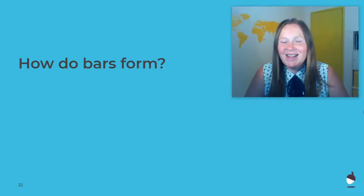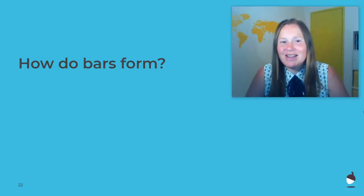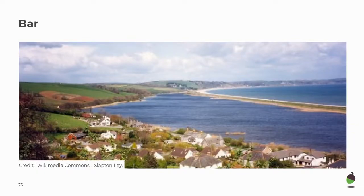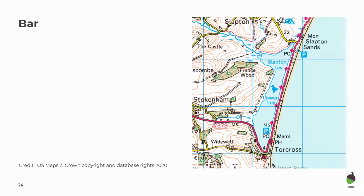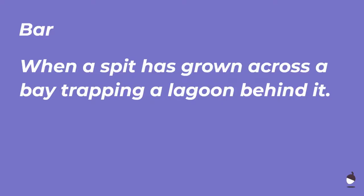Good work. Let's transport our learning on a little bit further to now have a look at how bars form. Here's a photo of a bar, and this bar is at Slapton Link. You can't actually see the whole of the bar because it's such a large landform. Here it is on the map — the same one. You can see that we've got a bar that stretches over two kilometres from Torcross to Slapton Sands. A bar is when a spit has grown across a bay, trapping a lagoon behind it. Pause now to get that definition written down.